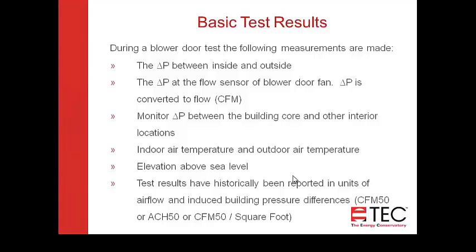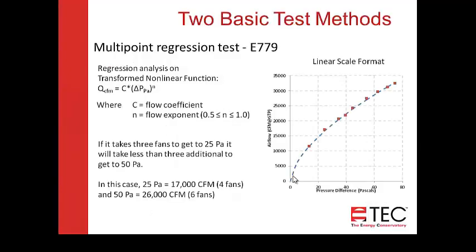Test results have historically been reported in units of airflow and induced pressure differences. The most common ones: results reported in CFM50 or air changes per hour at 50, or CFM per square foot of floor area, or potentially at a different pressure such as 75 pascals. There are two basic test methods. The first is multipoint regression — ASTM E779 — which does regression analysis using the formula for flow: Q equals a flow coefficient times the change in pressure raised to the N flow exponent.